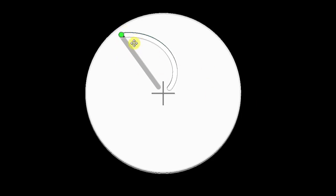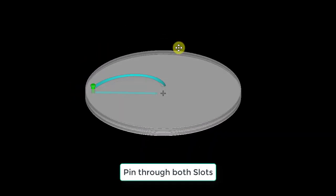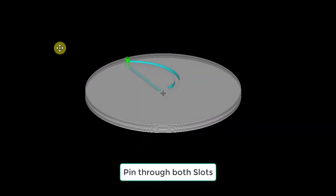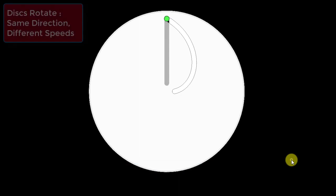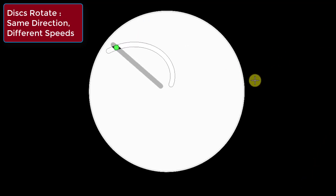Now, through that opening we will place a pin. So, that pin is going right through over here and if we make these two discs rotate in the same direction but not to the same extent then the two slots will move relative to each other like this.